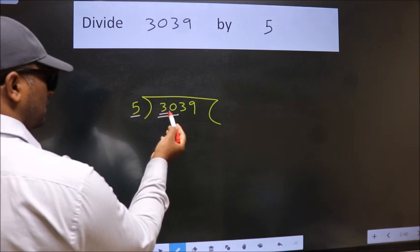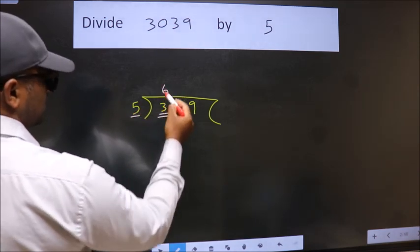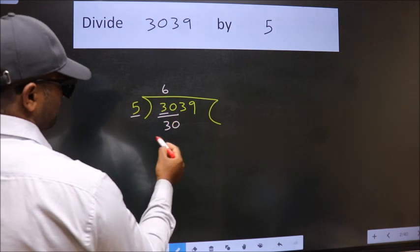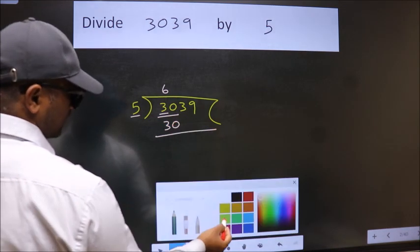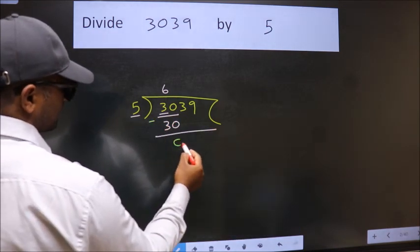When do we get 30? In the 5 table: 5 times 6 is 30. Now, we should subtract. We get 0.